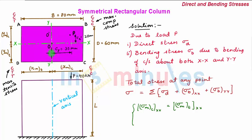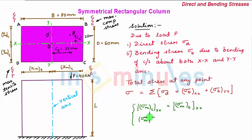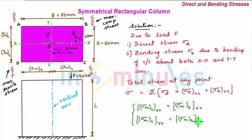Similarly, when the cross-section bends about yy-axis, since the section is symmetrical about yy-axis, xmax in compression equals xmax in tension. Therefore sigma_max in compression about yy-axis equals sigma_max in tension about yy-axis.